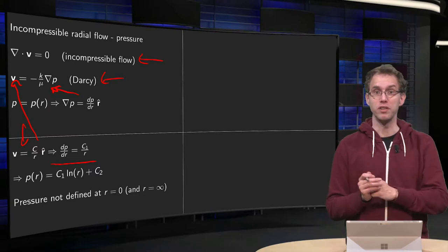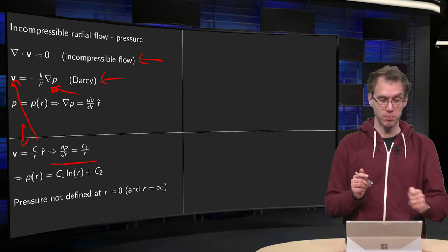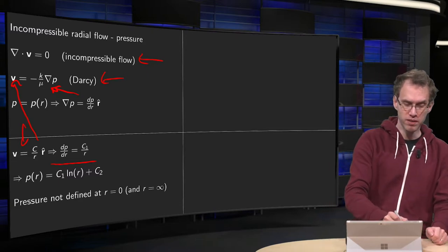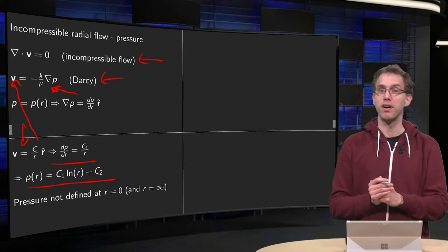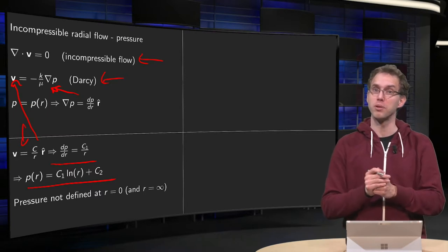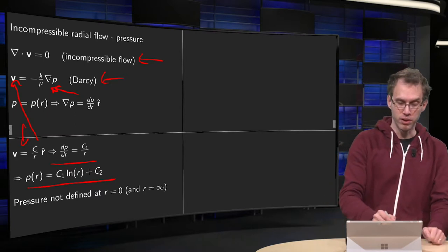Now we can solve this equation, we can just integrate with respect to r, and we find our pressure p of r equals a constant times the logarithm of r plus some other constant.